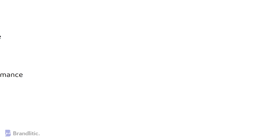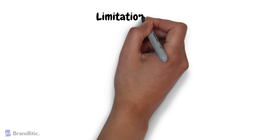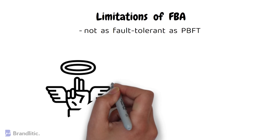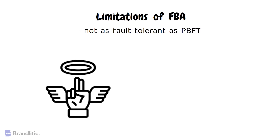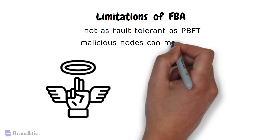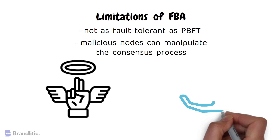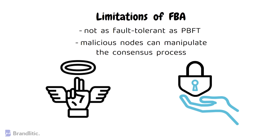However, FBA also has its limitations. It's not as fault-tolerant as PBFT because it relies on the assumption that most nodes are honest. If a federation is controlled by a malicious node, they can manipulate the consensus process and undermine the security of the network.